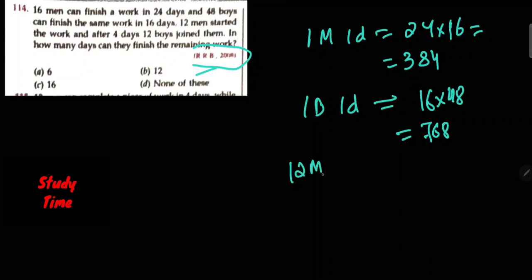12 men, 4 days work. 12 into 4 equals 48. 48 by 384 equals 1 by 8. So 1 minus 1 by 8 equals 7 by 8 remaining work.